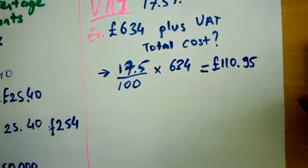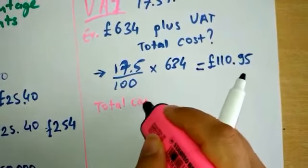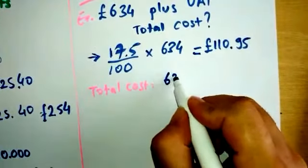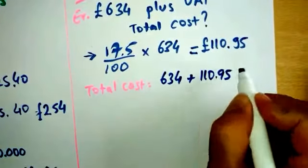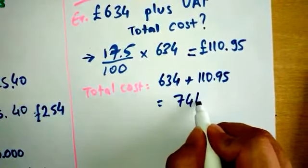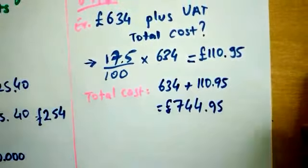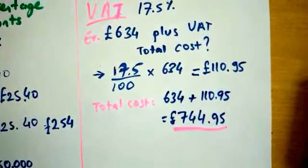So the total cost will come to £634 plus £110.95, which is £744.95. As you see, my total cost increased when I added the VAT.